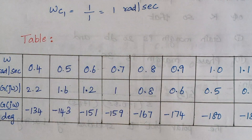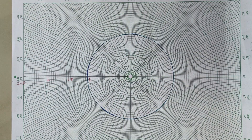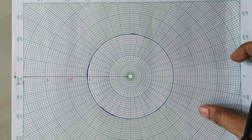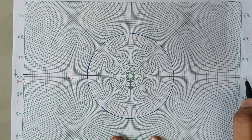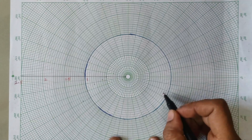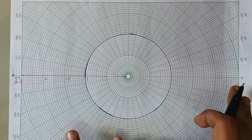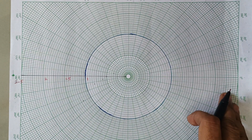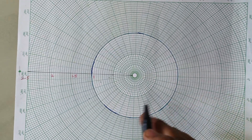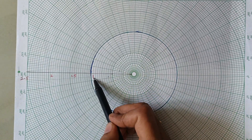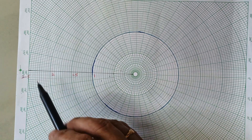Now we draw the polar plot. Place the polar sheet so that the right-hand side is 0 degrees and the left-hand side is 180 degrees. Depending on the values from the table, scale the magnitude — here I have taken the unity circle as 1, then 1.5, 2, and 2.5.